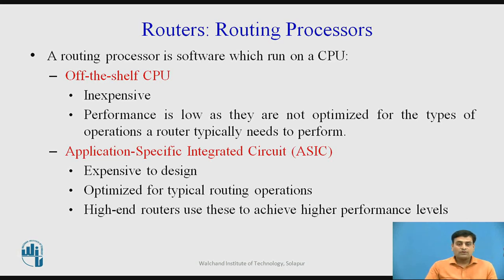There are two types of routing processors. The first is an off-the-shelf CPU, which is inexpensive but has lower performance since it is not optimized for the type of operations a router typically needs to perform. The second type is Application Specific Integrated Circuits (ASICs), which are expensive to design and implement but are optimized for typical routing operations. High-end routers use ASICs to achieve higher performance levels.